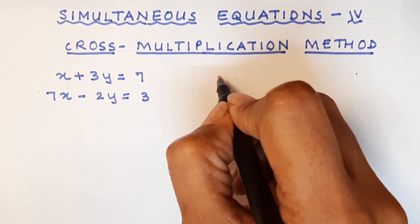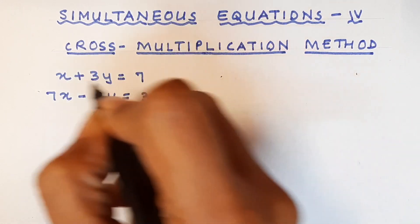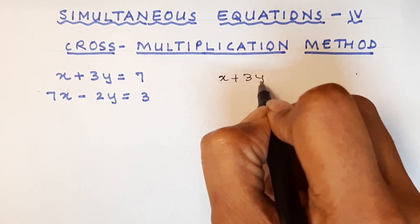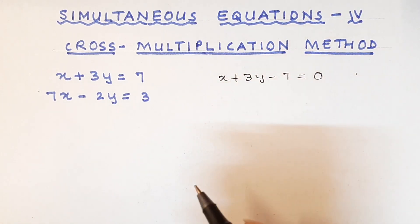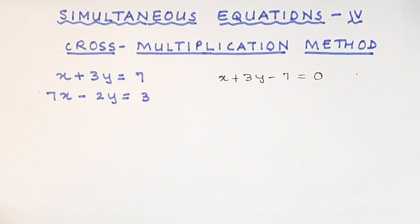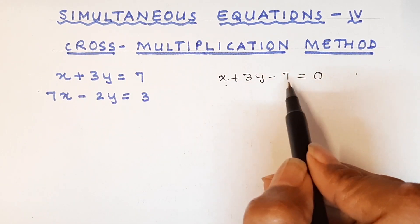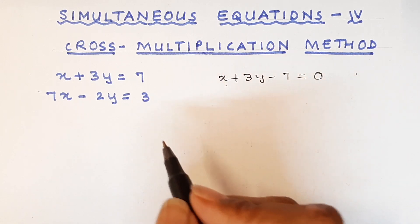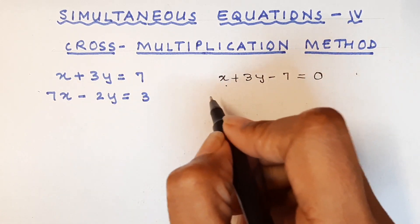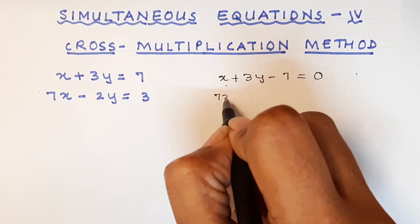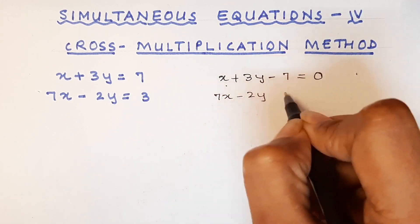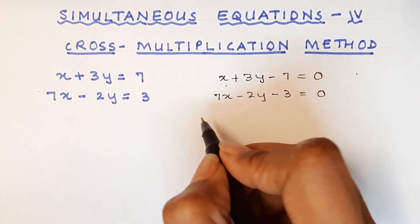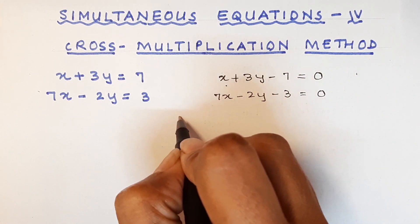Now we have to write first the equation as x plus 3y minus 7 equal to 0. So we take all the terms one side. So we'll have x term, y term and the constant, and that is equal to 0. Exactly the same thing we'll do here as well. So 7x minus 2y minus 3 is equal to 0.